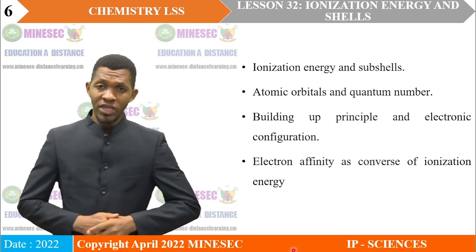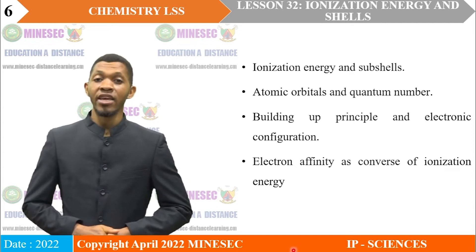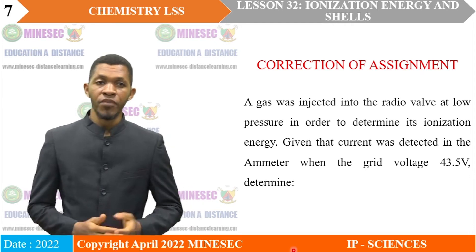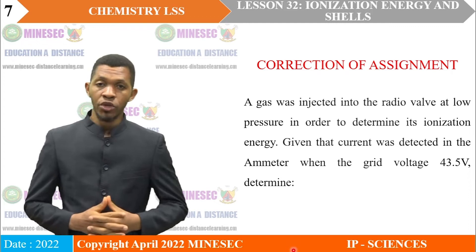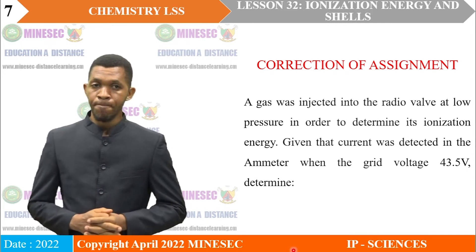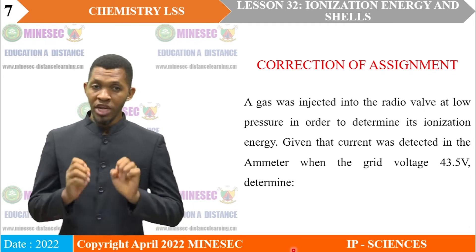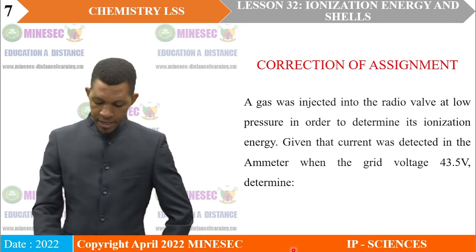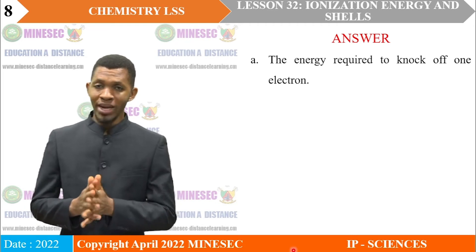Before beginning today's lesson, I would like us to correct the assignment from our previous lesson. Correction of assignment: a gas was injected into the radio valve at low pressure in order to determine its ionization energy. Given that the current was detected in the ammeter when the grid voltage was 43.5 volts. Determine: A — the energy required to knock off one electron.